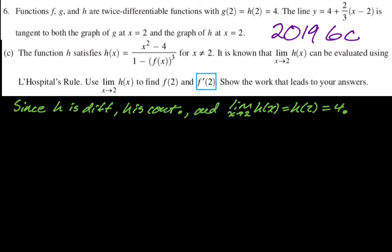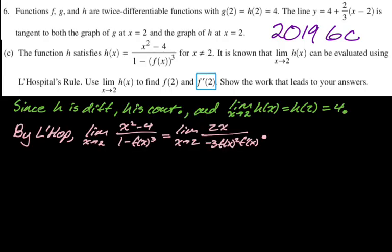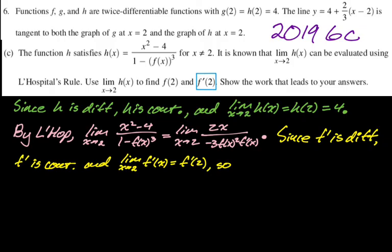Now I'll apply L'Hopital's rule to find F'. By L'Hopital's, the limit as x approaches 2 of (x² − 4)/(1 − [F(x)]³) equals the limit as x approaches 2 of 2x/(−3[F(x)]² · F'(x)). Remember to write the limits every step. Since F is twice differentiable, F' is differentiable, so F' is continuous, and therefore the limit as x approaches 2 of F'(x) equals F'(2).